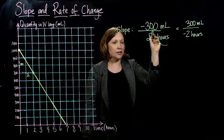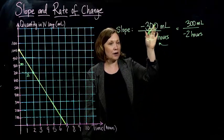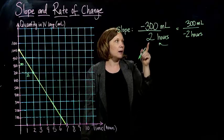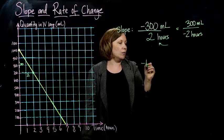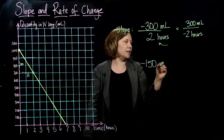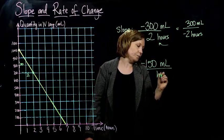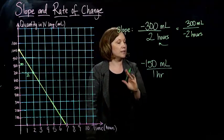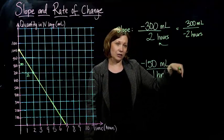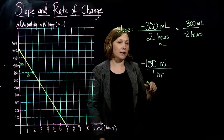What if we wanted to know per 1 hour? Well, if we take our negative 300 and divide by 2, we get negative 150 milliliters per 1 hour. So that would mean our slope is negative 150. So it goes down 150 milliliters for every hour.